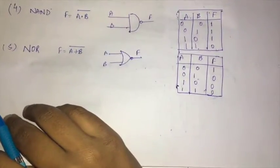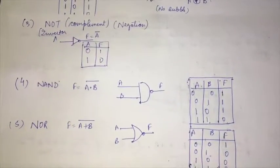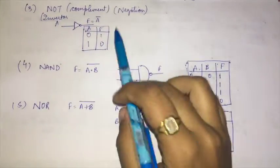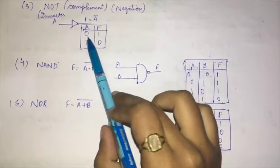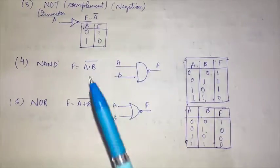Next is the NOT gate, also called the complement gate or negation gate. Whatever the input, it simply gives the opposite—0 becomes 1 and 1 becomes 0.